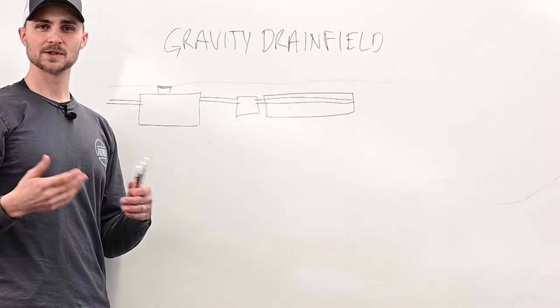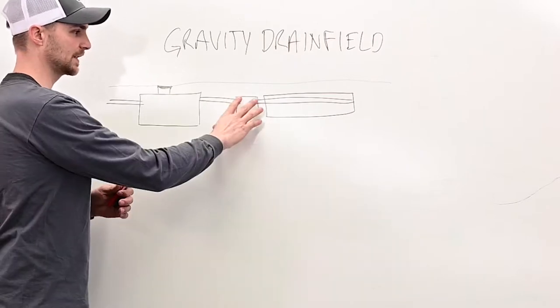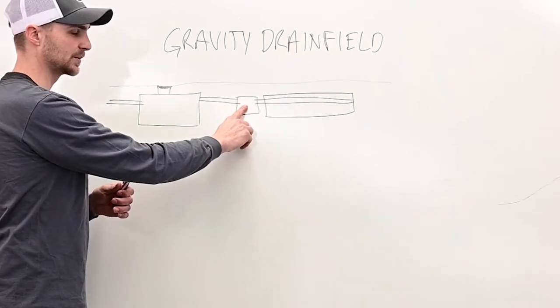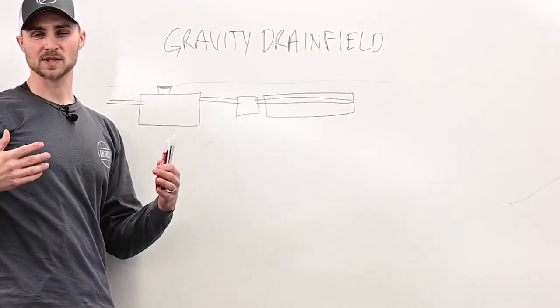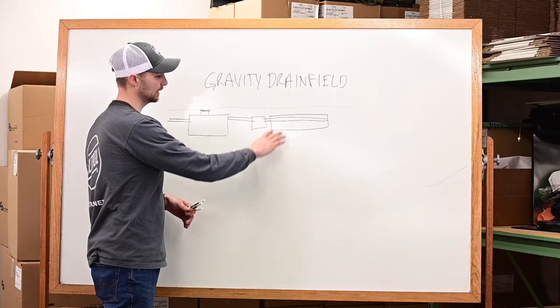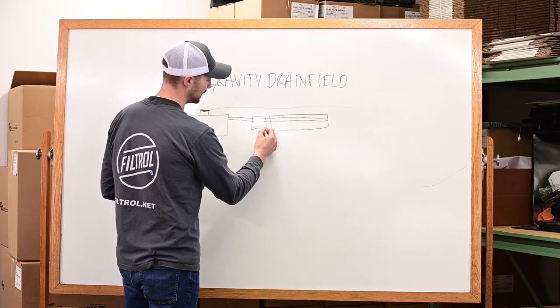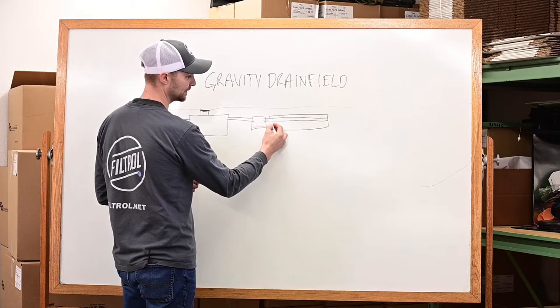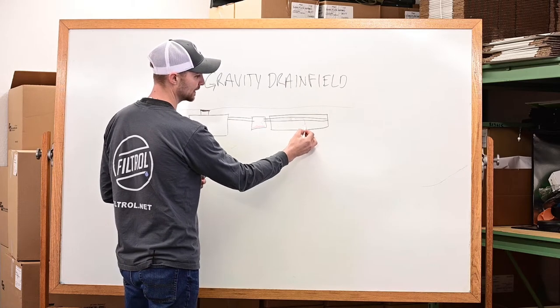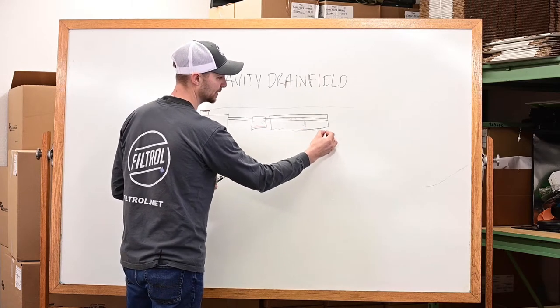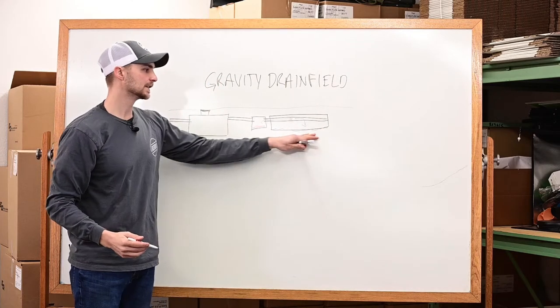The downside of that over time is you're going to accumulate fibers and sludge in your distribution box, which can be expensive to dig up and clean. The other thing that's going to happen is those fibers are going to not only accumulate in the distribution box, but some of them will make it out into your drain field and down into the soil, potentially creating a plugging layer on the bottom.